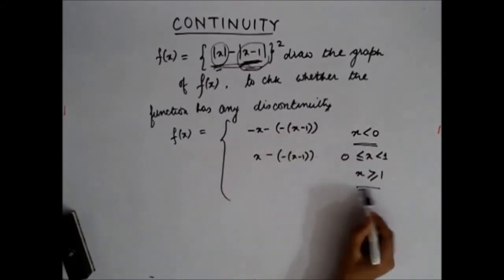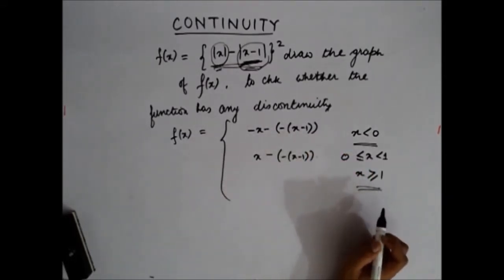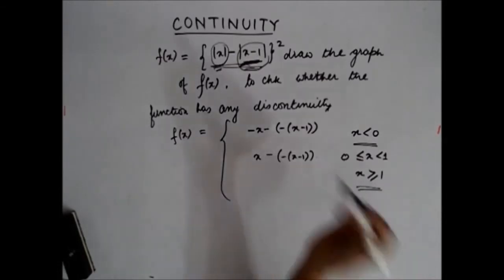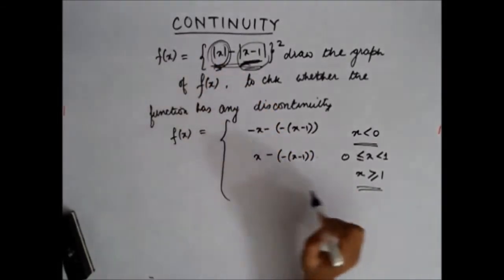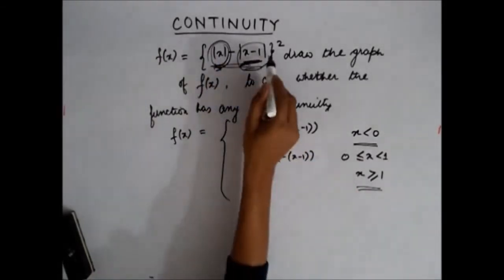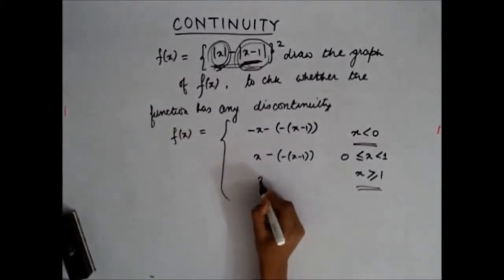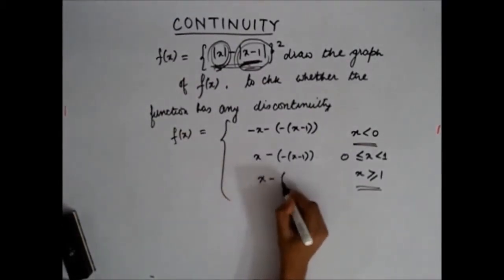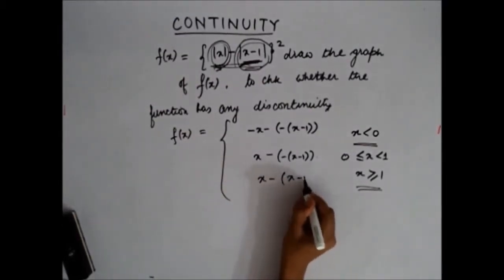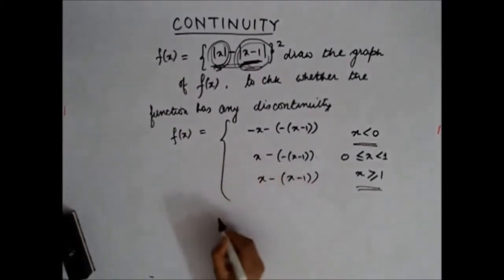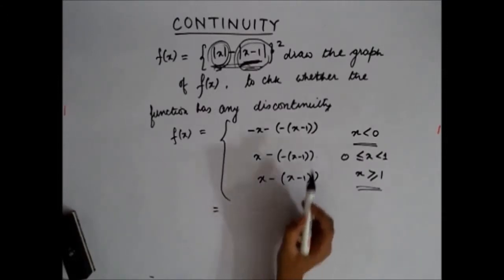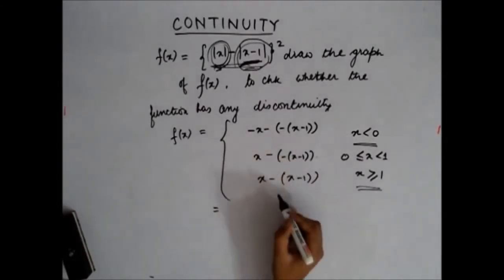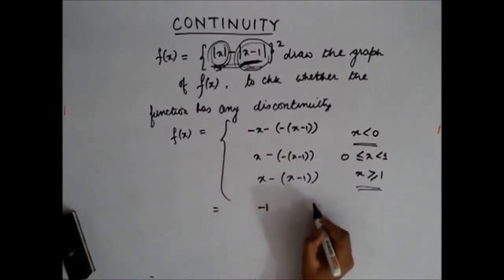When x is greater than 1, both x and x minus 1 are positive quantities. So the expression becomes x minus x minus 1, which simplifies to 1. But remember there is a whole square, so I need to square each result. For x < 0 I get minus 1 squared.